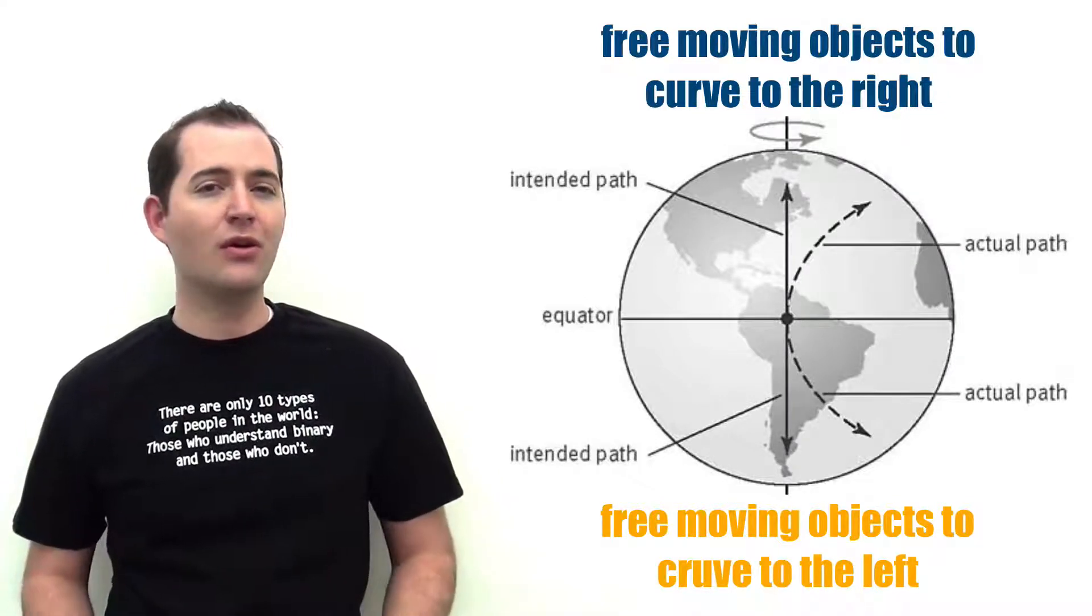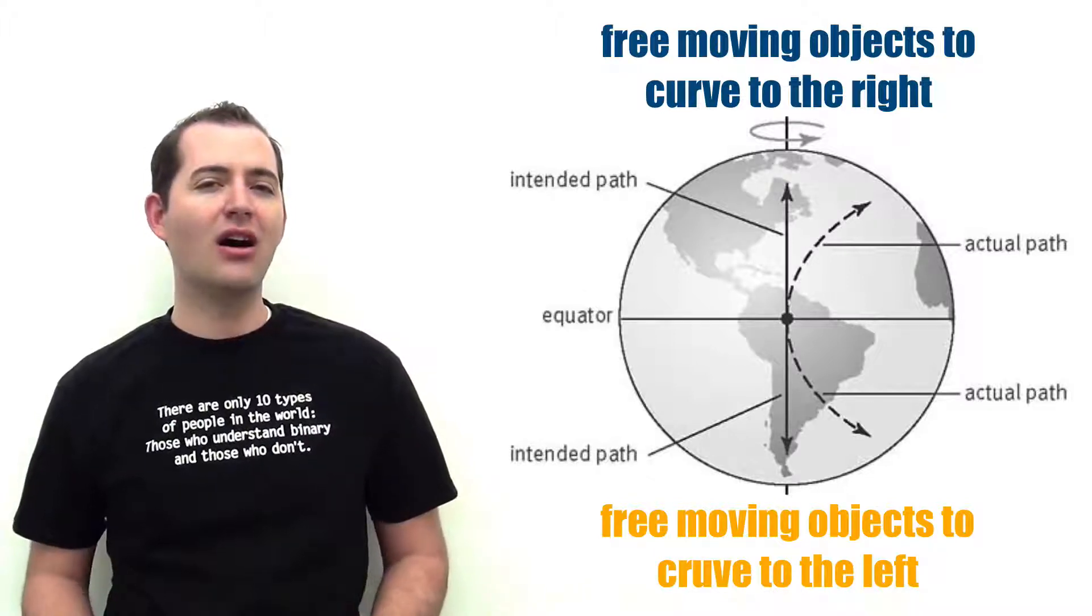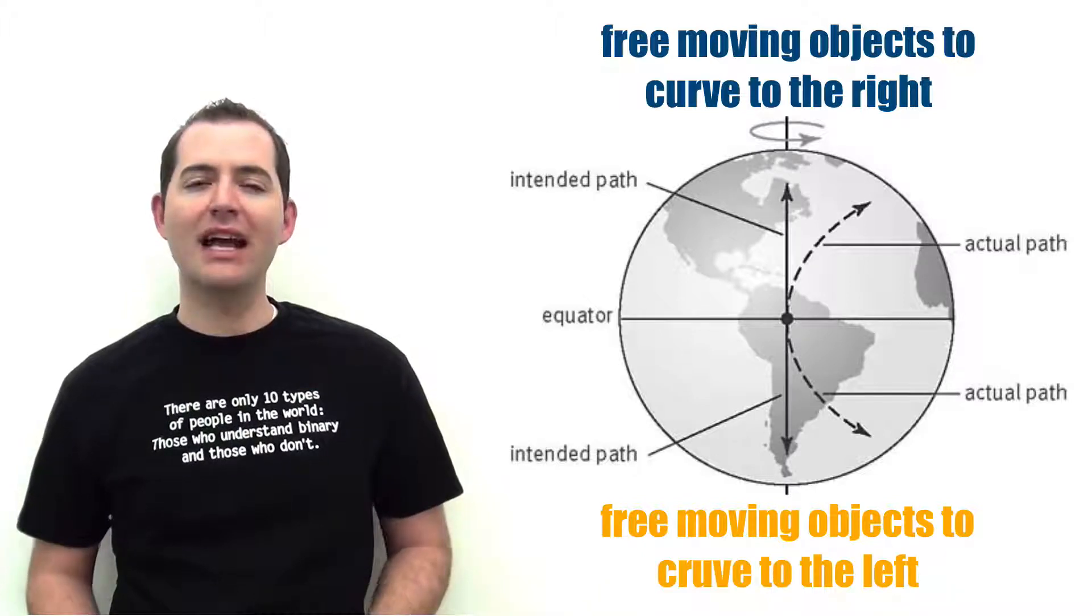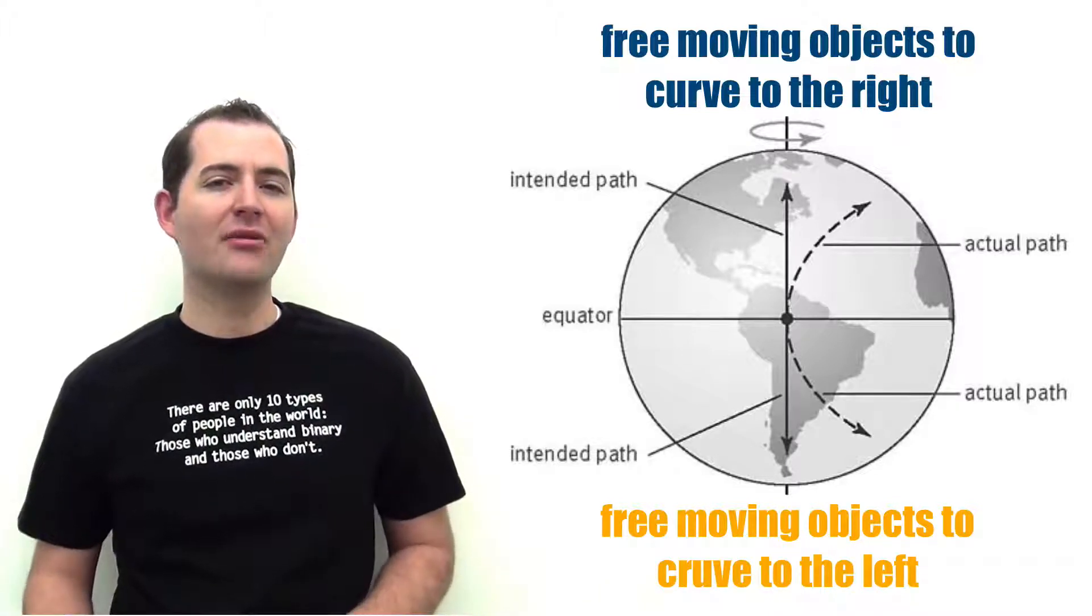The Coriolis effect applies to all objects, not just wind. For example, it impacts the movement and navigation of airplanes, rockets, and even birds.